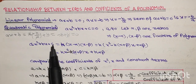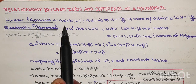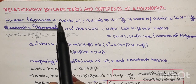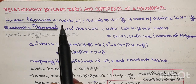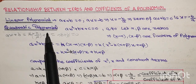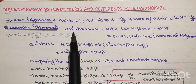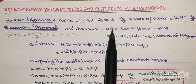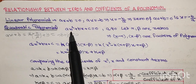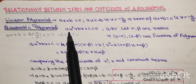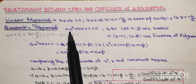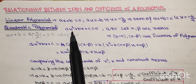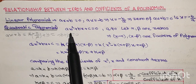So students, agar polynomial linear hai toh polynomial ko equal to zero put karenge, wahan se variable x ki value find out karenge — wahi polynomial ke liye zero ka kaam karega. Quadratic polynomial mein: polynomial of the form ax square plus bx plus c equal to zero, where a is not equal to zero. Variable ki highest power 2 hoti hai — yahi hamara quadratic polynomial hota hai.